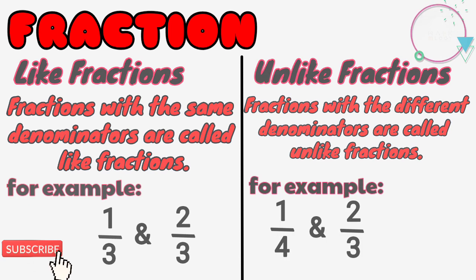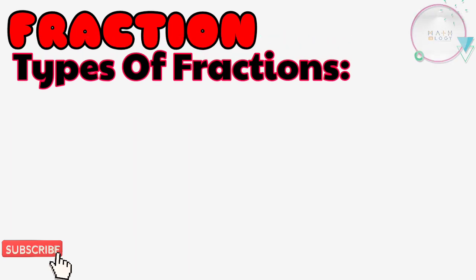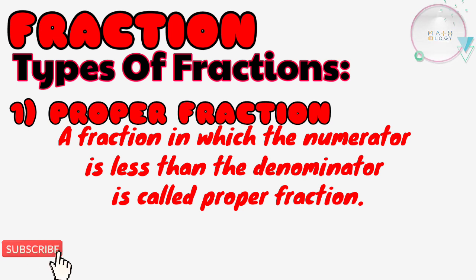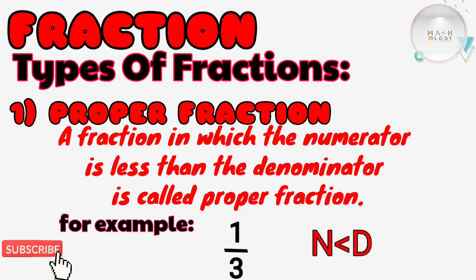Let us learn types of fractions. Proper fraction: a fraction in which the numerator is less than the denominator is called a proper fraction. For example, 1/3—here the numerator is less than the denominator. 1 is less than 3, that's why 1/3 is a proper fraction.